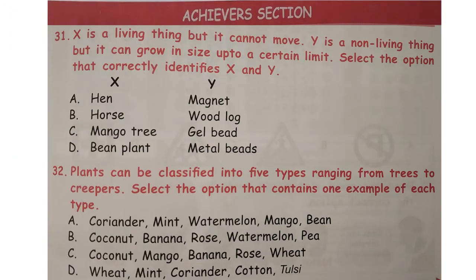Achiever section — here each question carries two marks. X is a living thing but it cannot move. Y is a non-living thing but it can grow in size up to a certain limit. Select the option that correctly identifies X and Y. Answer is option C.